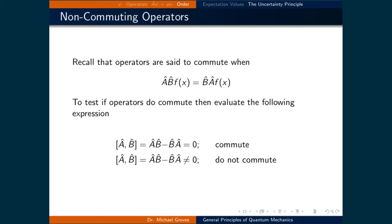In order to derive Heisenberg uncertainty relationships from the operators themselves, we will first return to the topic of commutation. Previously, we showed that order can be important and used that to define postulate number 4. Now let's examine what it means when two operators do not commute.